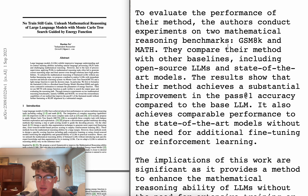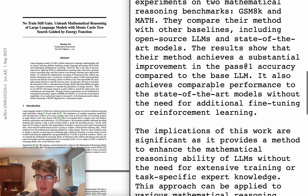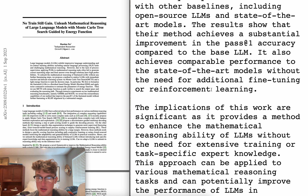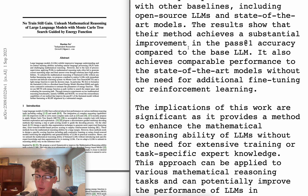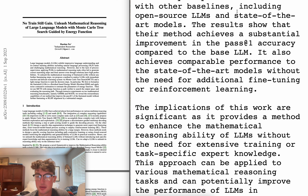Experiments on two mathematical reasoning benchmarks. They compare their method with other baselines. Experiments show that their method achieves a substantial improvement in the pass-at-first-try accuracy compared to the base LLM. Also achieves comparable performance to state-of-the-art models without the need for additional fine-tuning or RL, which is so cool. Don't get me wrong, AI is going to be doing math pretty soon - it's doing math now. AI is going to be replacing mathematicians pretty soon. It's going to be so good at proving. I'm very excited for that. But not my cup of tea for this paper.